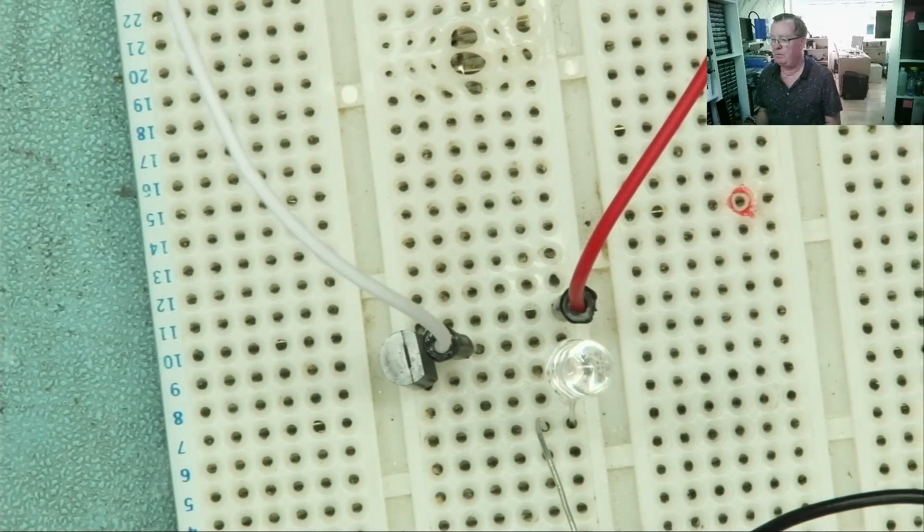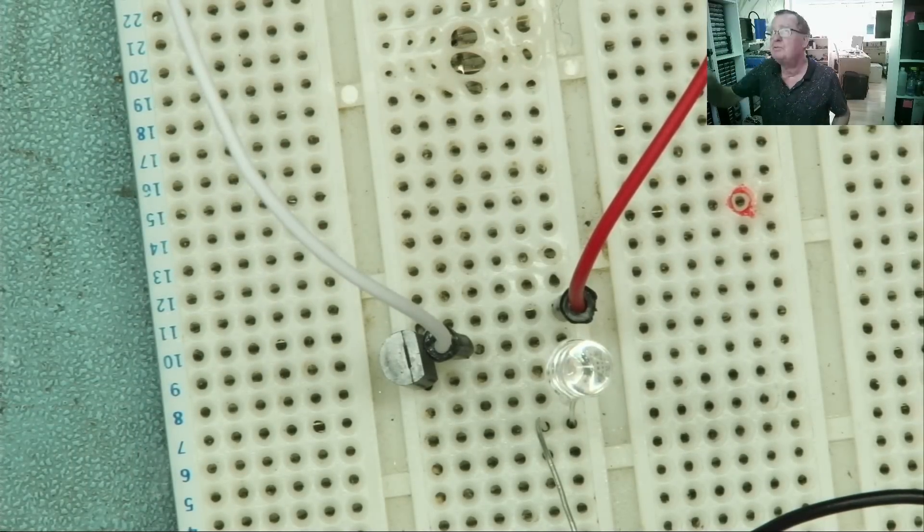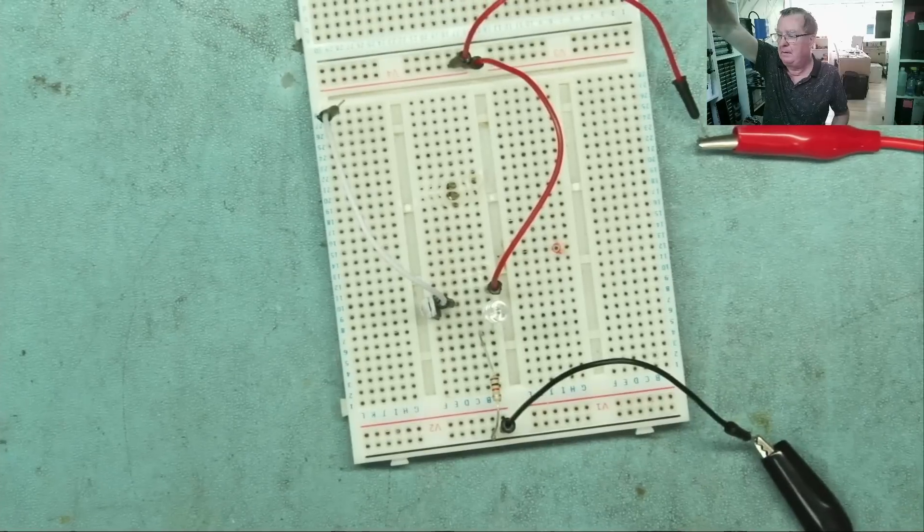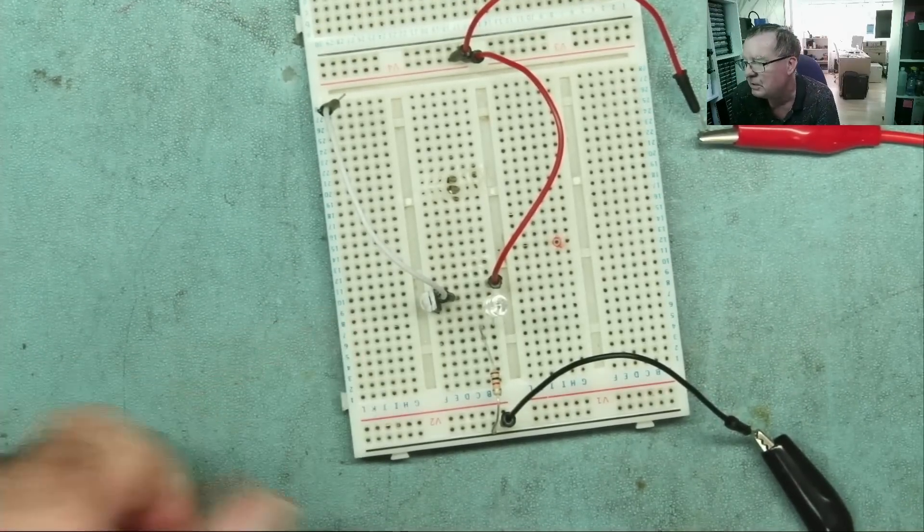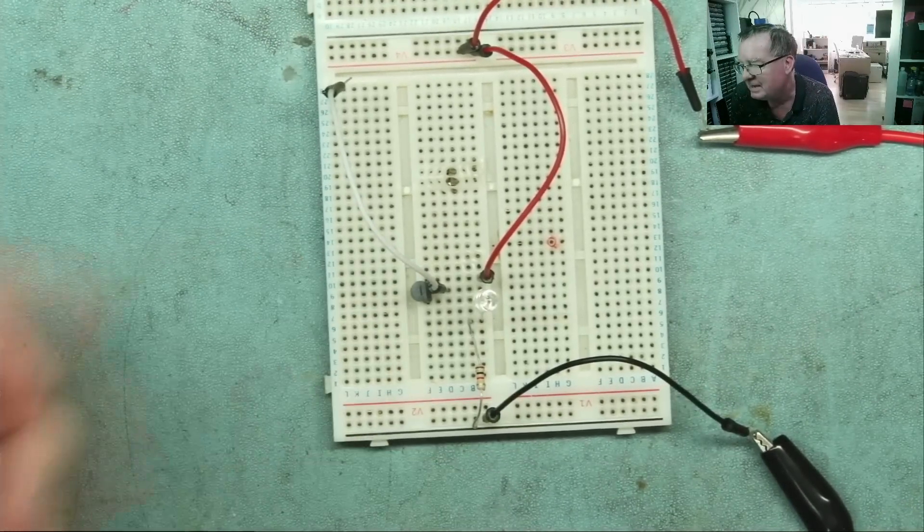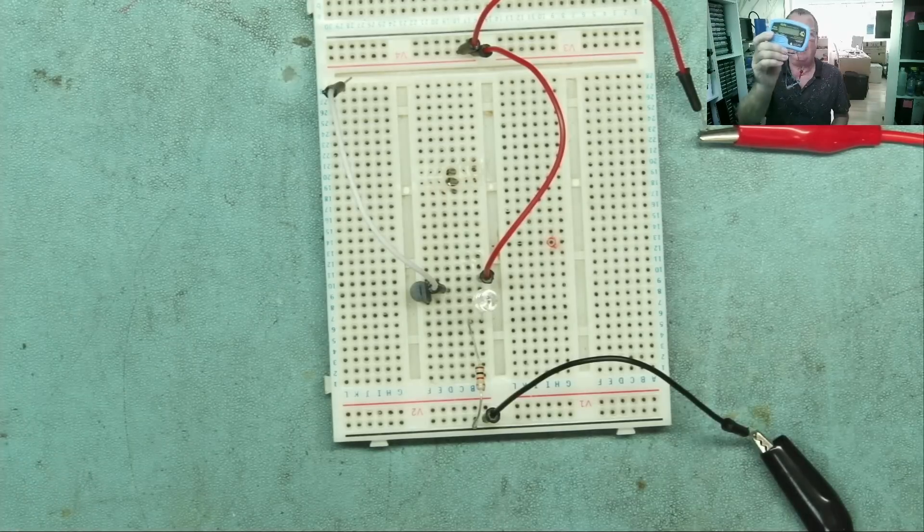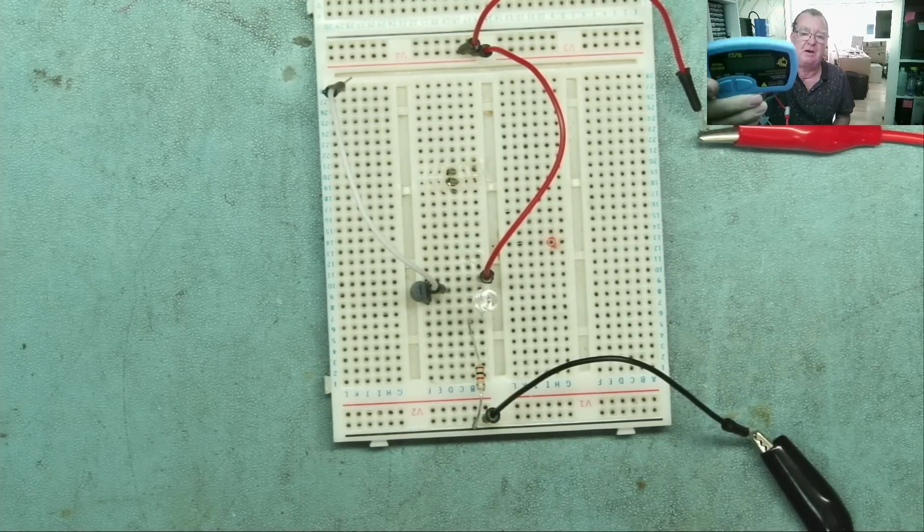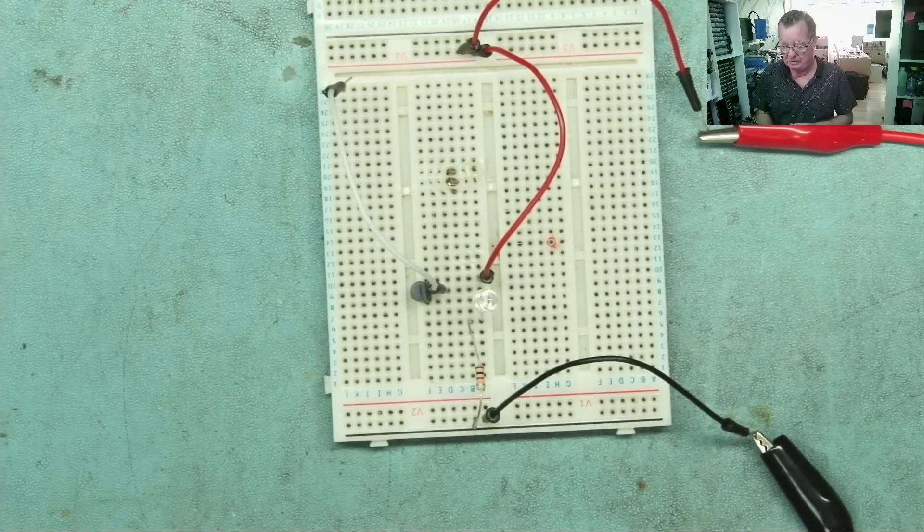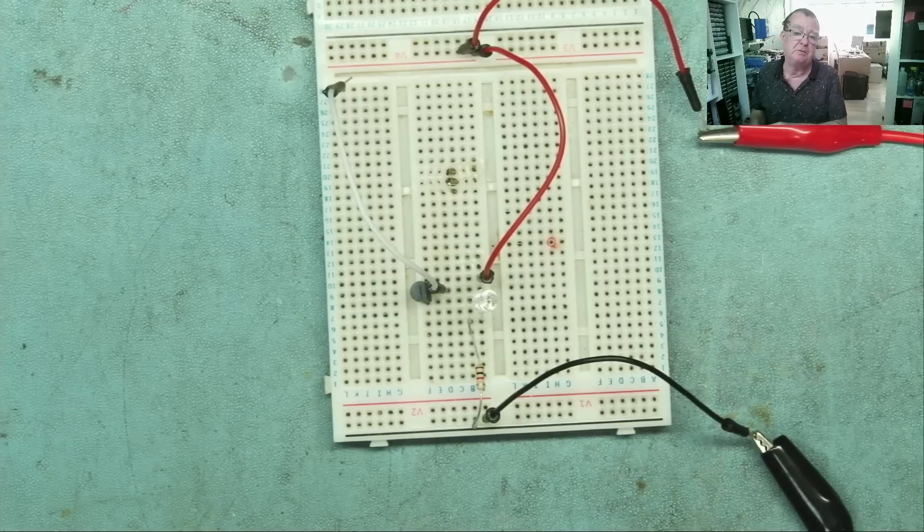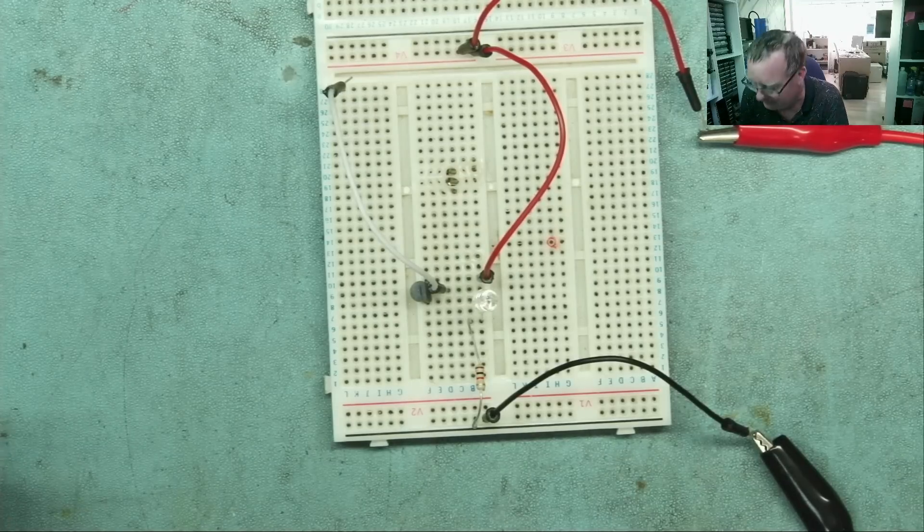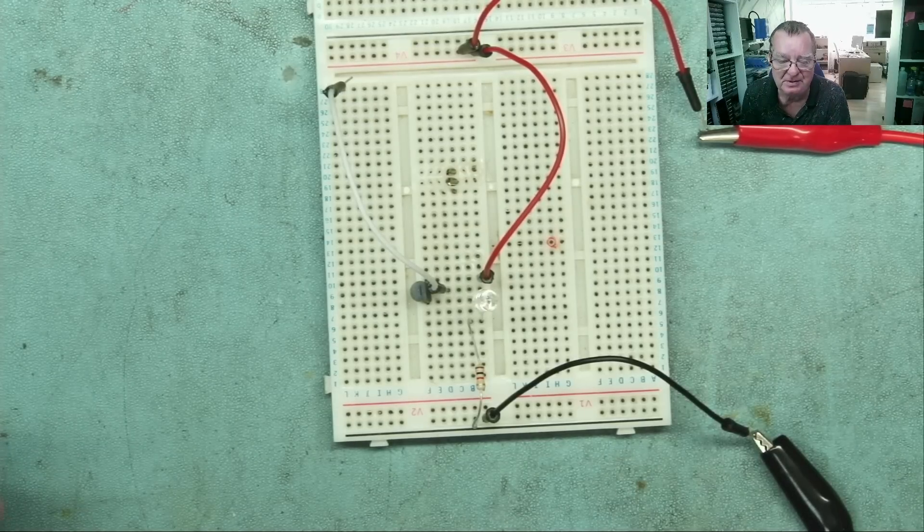It doesn't matter which way in the circuit it goes. As long as the gate is the gate. It works just the same. That's why my component analyzer couldn't tell me which is the drain and which is the source. Because they're interchangeable. They're interesting devices, aren't they, these JFETs?